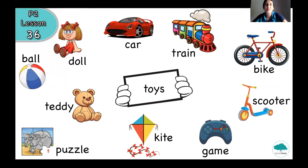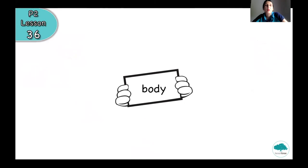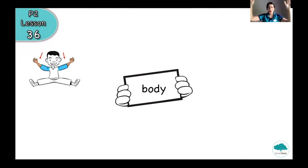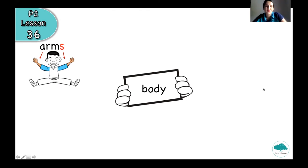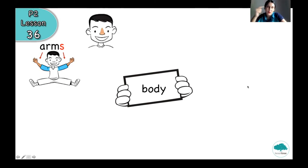Great job, excellent! We remember our toys. And the last topic was about body parts. Let's check together. If you remember or know, what is this? These are arms — we have two arms. And what about this? It's a nose — that's correct. We have only one nose.